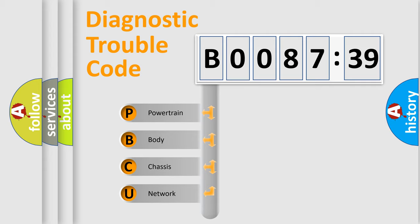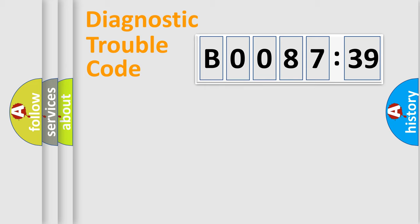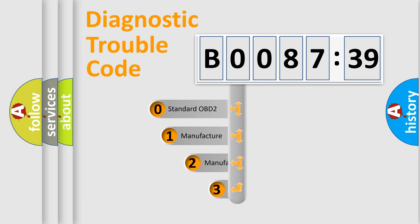We divide the electric system of automobile into four basic units: Powertrain, Body, Chassis, and Network. This distribution is defined in the first character code.